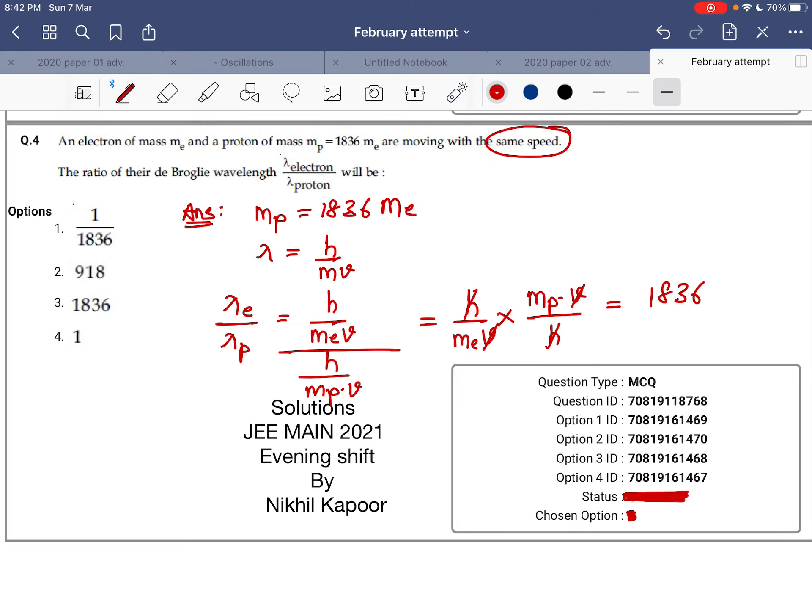As Mp is 1836 times Me divided by Me, Me gets cancelled and the answer comes out to be 1836. So the correct answer to this question is option number 3. Thank you.